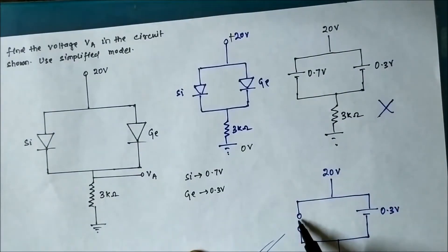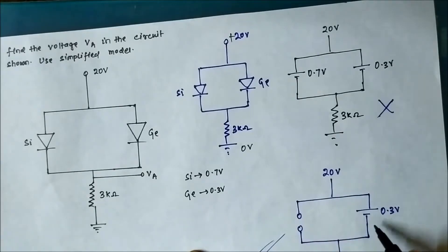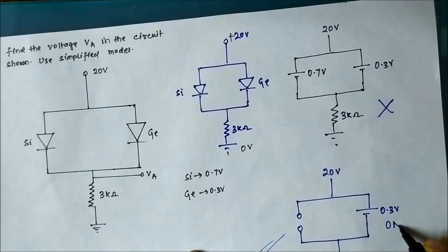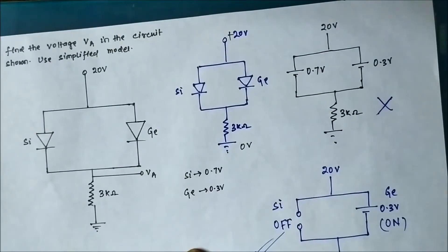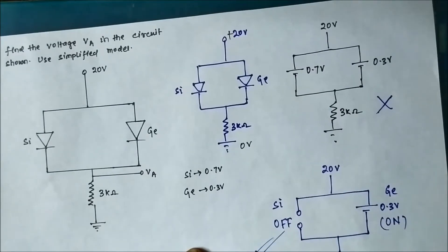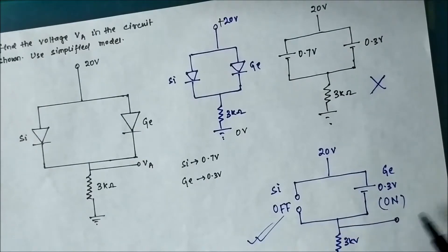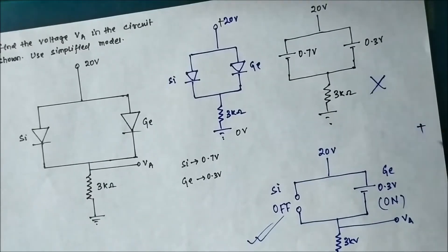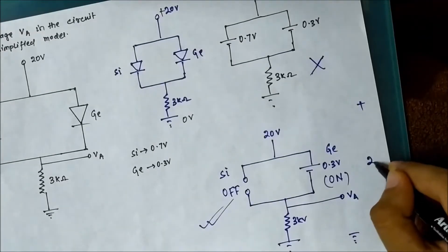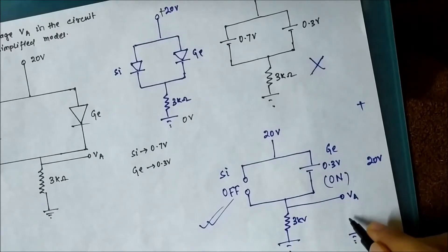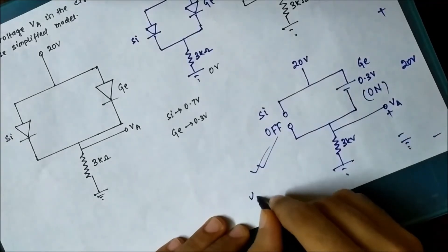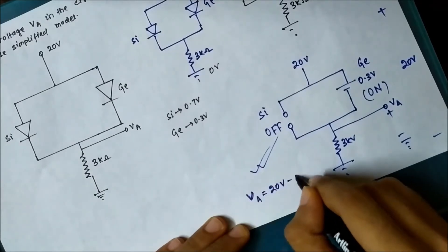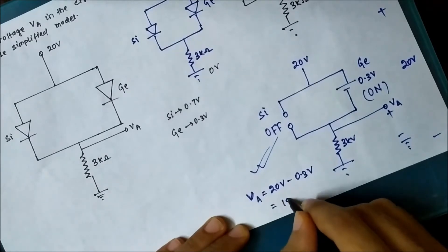As a result, silicon remains off — always reverse biased — and only germanium is turned on and forward biased. The cut-in voltage of silicon is higher than germanium, so silicon stays off. To find the voltage at point A: the source is 20 volt and the germanium drop is 0.3 volt, so Va = 20 volt minus 0.3 volt = 19.7 volt.